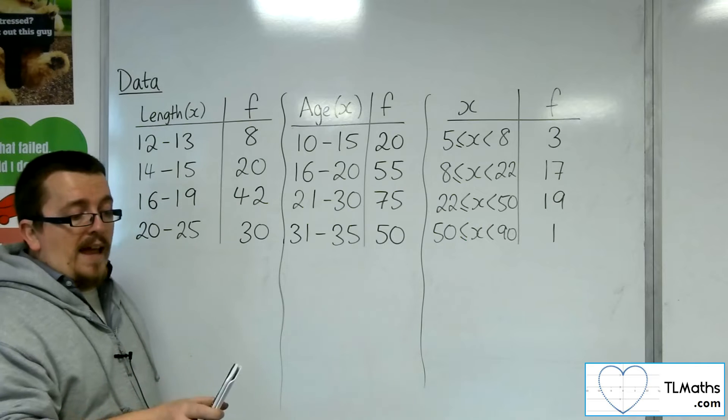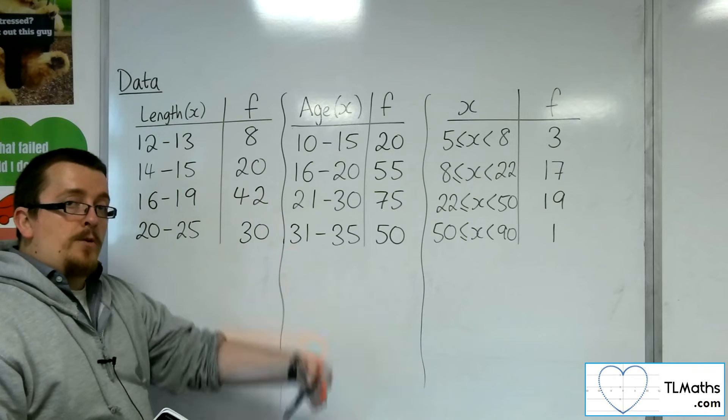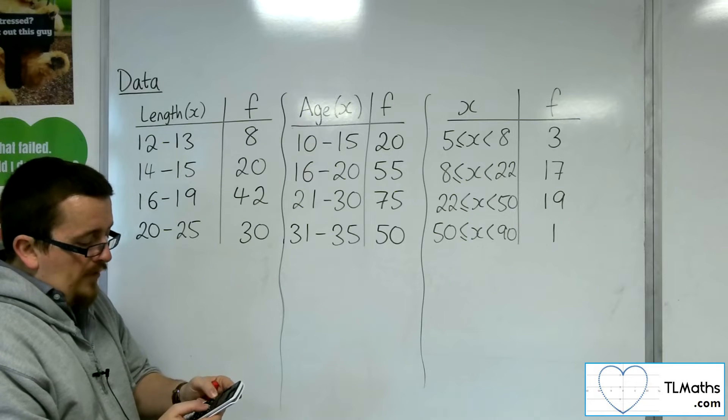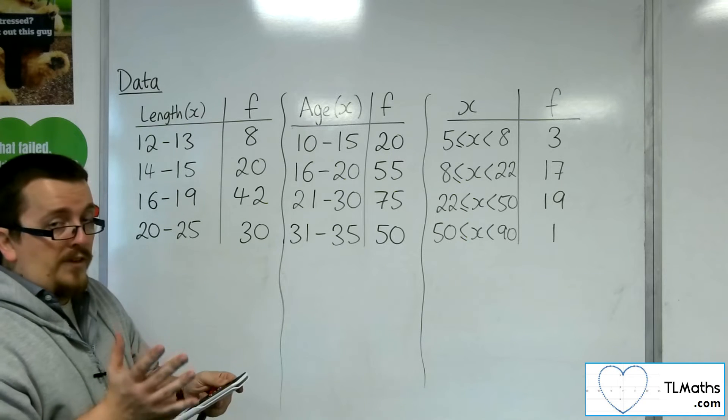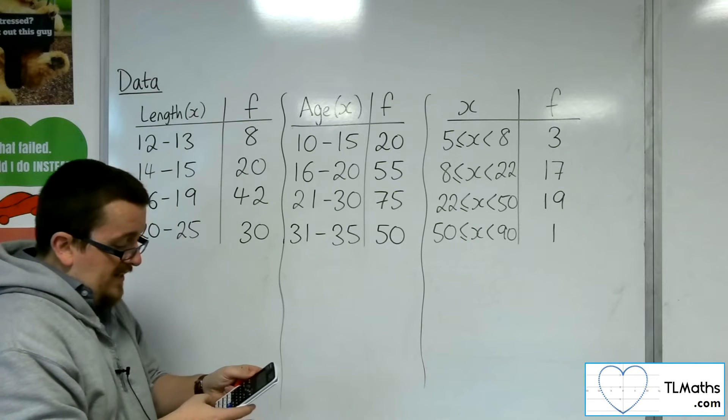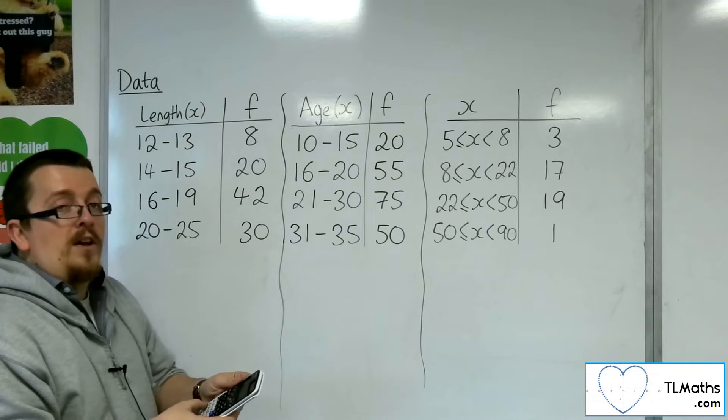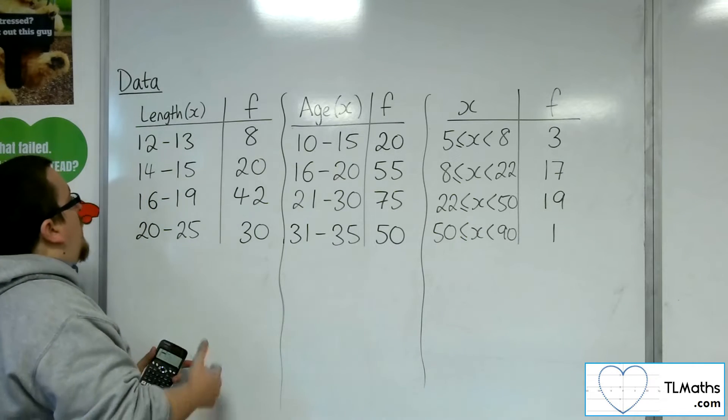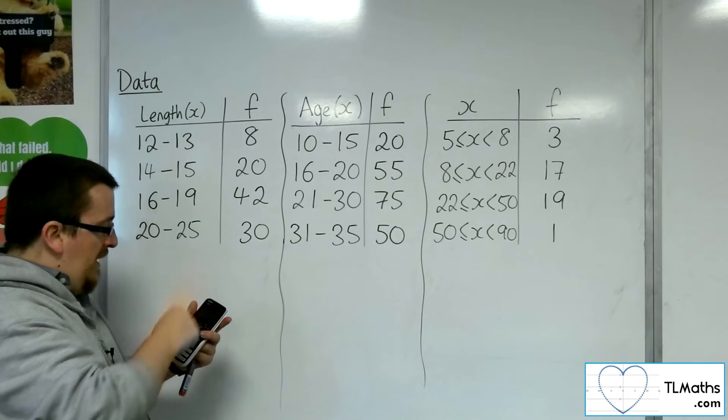Then you should get x column and a frequency column. Now remember, if you don't have a frequency column, if you're not seeing that, go shift, menu, so setup. Scroll down until you see number 3 statistics, and then frequency on. And then your frequency column should appear.